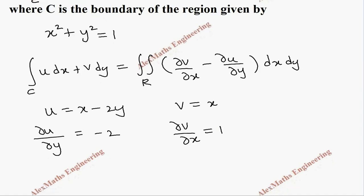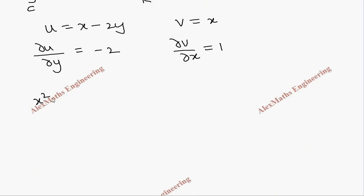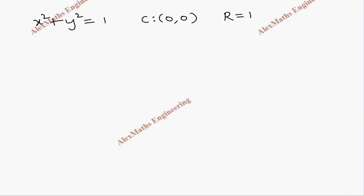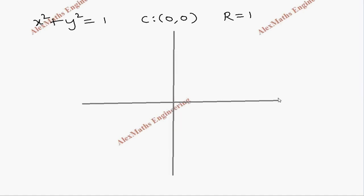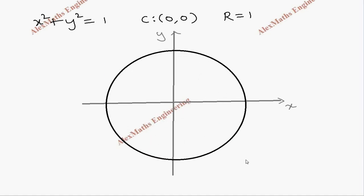The given boundary is a circle whose equation is x² plus y² equals 1. From this, we get that the center of the circle is the origin and the radius is 1. We are going to draw a diagram showing the horizontal and vertical axes. This is our x-axis and y-axis, and we have a circle with center at the origin and radius 1. This entire region is under consideration.